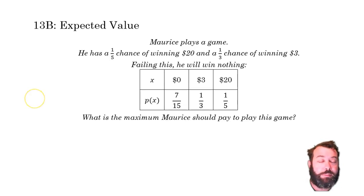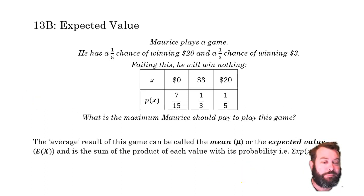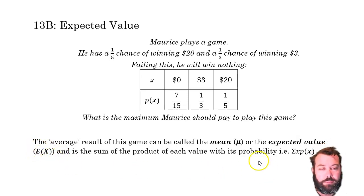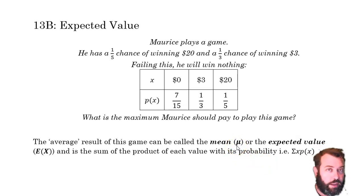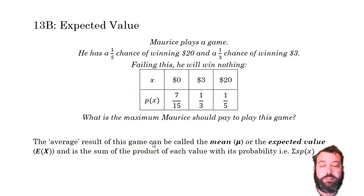In fact, expected value is also referred to as the mean. Its expected value is written with a capital E and a capital X inside the brackets — E(X) — but also as the mean, which is this lowercase Greek character mu. Mu looks like a U with a long leading tail. So mu is the mean or the expected value.